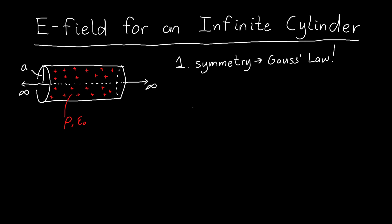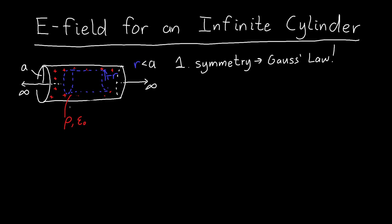To apply Gauss's law we first need to pick a Gaussian surface. I'm going to start with a Gaussian surface that has a smaller radius than my cylinder of charge, so I can figure out what the electric field is inside the cylinder. Let's say this has some radius little r, where little r is less than the radius a. I'll choose the length of the Gaussian cylinder to be l, and hope that it ends up not mattering in the end.